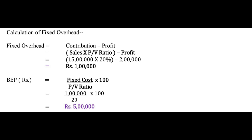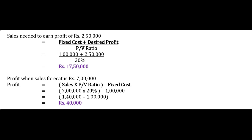After calculating BEP Sales, the next requirement of the question is: if the firm wants to earn a profit of ₹2,50,000, how much sales must it make? We call this ₹2,50,000 the desired profit. The formula for sales required to earn a desired profit is: Fixed Cost plus Desired Profit, divided by PV Ratio. Fixed Cost = ₹1,00,000, Desired Profit = ₹2,50,000, PV Ratio = 20%. Putting values into the formula, the answer is ₹17,50,000. So to earn a profit of ₹2,50,000, the company must make sales of ₹17,50,000.